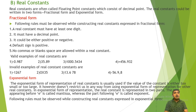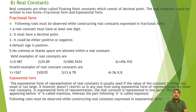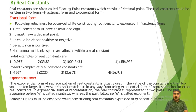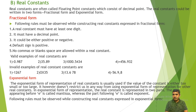Further invalid examples of real constants: 13.6 78 (with a blank space) — invalid because blank space is not allowed; minus 56.9,8 — invalid because a comma is not allowed. So a real constant in fractional form must have at least one digit, must have a decimal point, can be positive or negative, default sign is positive, and no comma or blank space is allowed.